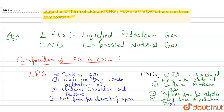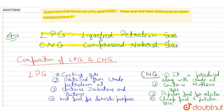So these are the main differences. The full form of LPG is Liquefied Petroleum Gas and CNG is Compressed Natural Gas. The main difference in composition is that LPG contains isobutane and butane, while CNG contains methane gas. Thank you.